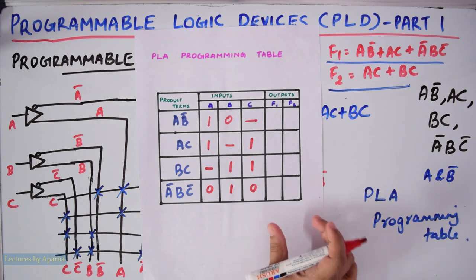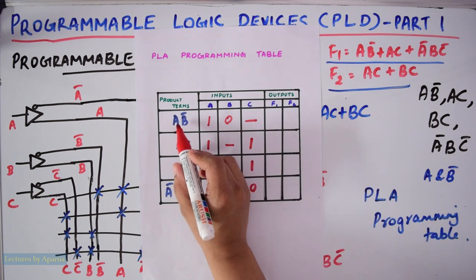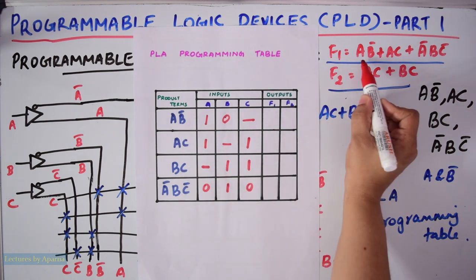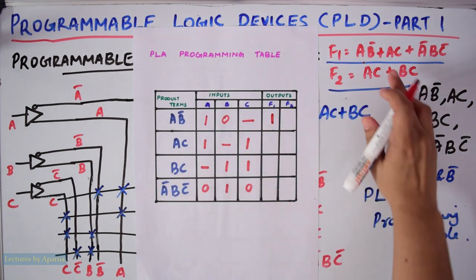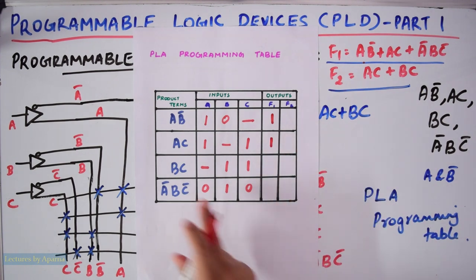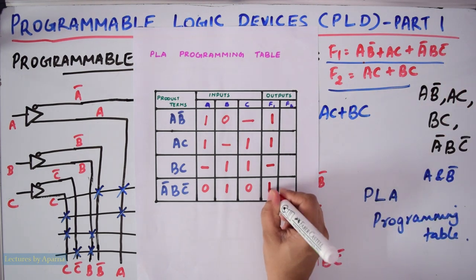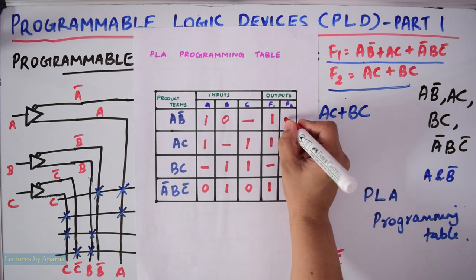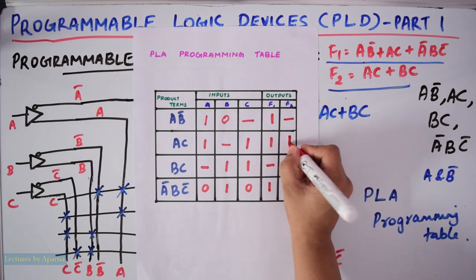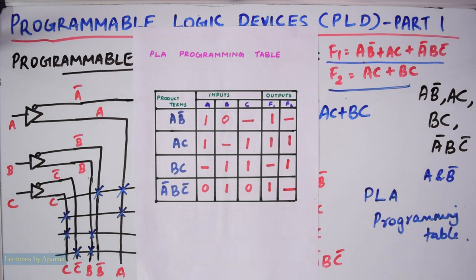In the third column — the output column — fill in F1 and F2. F1 will be 1 at AB̄ (since AB̄ is in F1), 1 at AC (since AC is in F1), dash at BC (not in F1), and 1 at ĀBC̄. For F2 = AC + BC: AB̄ is not there so dash, AC gets a 1, BC gets a 1, and ĀBC̄ is not there so dash. This is how you fill the PLA programming table.